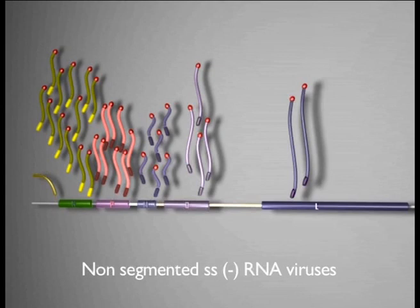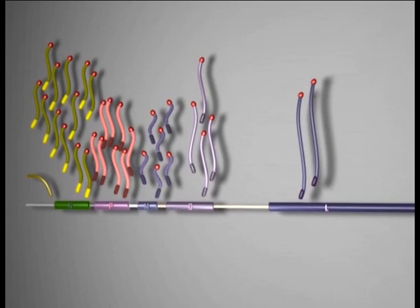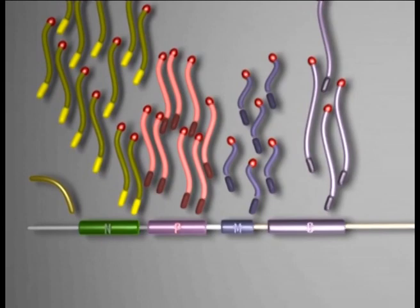It's a general feature of non-segmented, negative-strand RNA viruses and an important mechanism regulating individual gene expression and, consequently, replication. In other words, the abundance of the messenger RNAs that code for the nucleocapsid is not accidental.